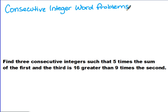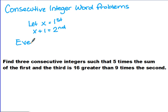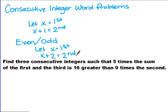When we set up our let statements, if the integers are consecutive, let x equal the first integer, and x plus 1 equals the second, because it's one right after the other. However, when we're doing consecutive even or odd, let x equal the first, but since even and odd numbers are two integers apart, we let x plus 2 equal the second integer.